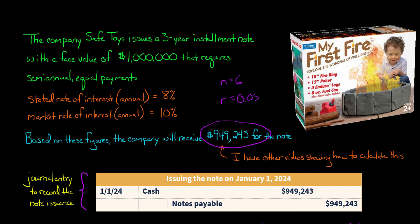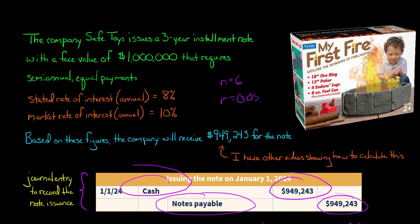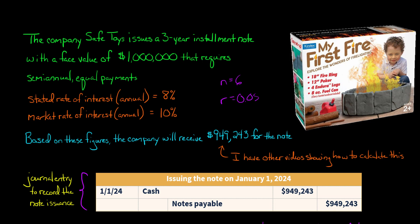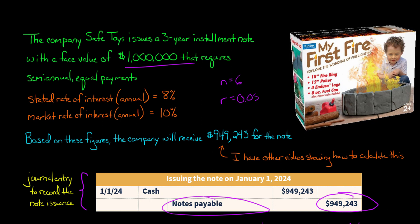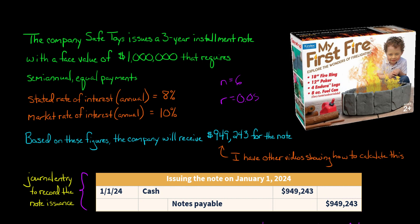I have other videos explaining how to calculate that figure, but that's not the main purpose here. When the note is issued, the borrower debits cash $949,243 and credits notes payable for $949,243. Notice we did not create a separate account for a discount on notes payable. The discount is the difference between the face value of $1 million and $949,243. Unlike bonds, where you'd typically have a separate discount account, for long-term notes it's common practice to net it together. So the notes payable balance represents the initial carrying value or book value of $949,243.